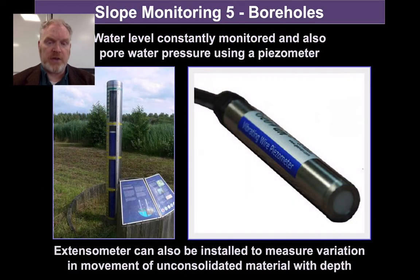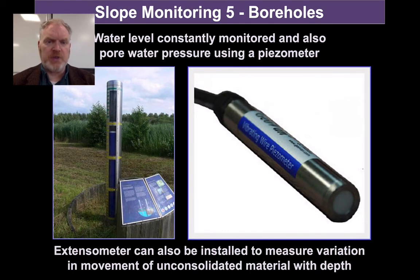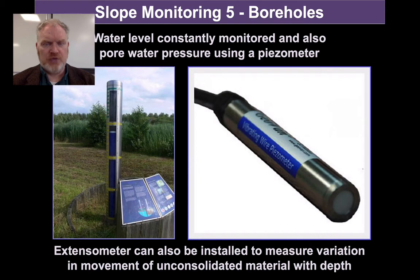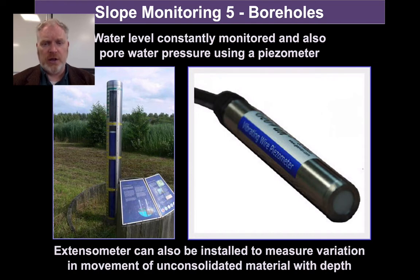We've talked at some length about the importance of water. Water, and particularly water pressure, is crucial in determining the risk posed by a mass movement. It is possible to measure the water table — the depth of the water table — down a borehole. And also using a machine called the piezometer, at the bottom of the borehole, we can measure any changes in water pressure. It's really the water pressure, which is a result of the changing water table, that can be the trigger of a mass movement. If we can monitor changes in this, it's possible to predict the likelihood of a mass movement.